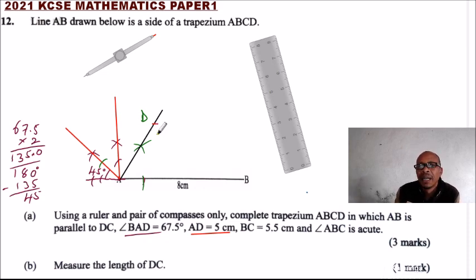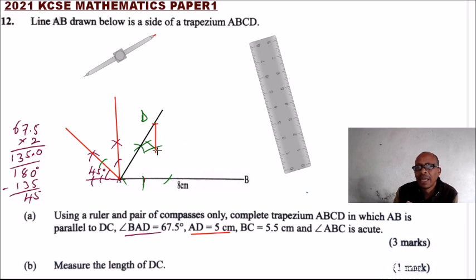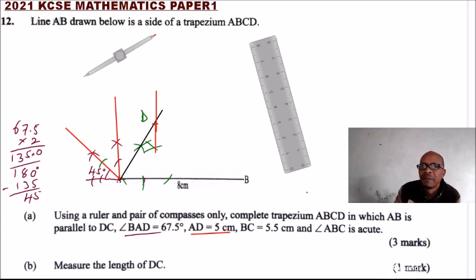Once you identify point D, we need to draw a parallel line, since DC is parallel to AB. To draw a parallel line, you pick your compass and draw a perpendicular. You extend your compass and make two marks. Using those two marks — using this one make a mark there, using this one make a mark there — then joining those two points gives a line perpendicular to AB.